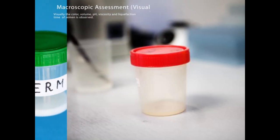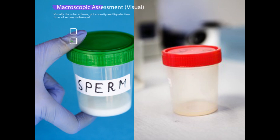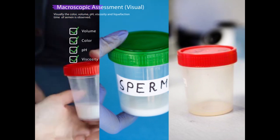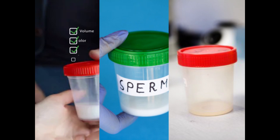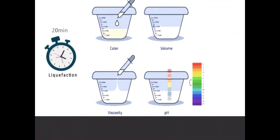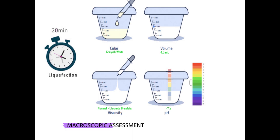First, it is assessed visually to observe certain parameters, called macroscopic assessment. This includes volume, color, pH, viscosity, and liquefaction time of the semen. Liquefaction time is the time it takes for semen to form a more fluid-like consistency as opposed to being gel-like and thick. Most samples are fully liquefied within 15 to 20 minutes, although rarely it may take 60 minutes or more.